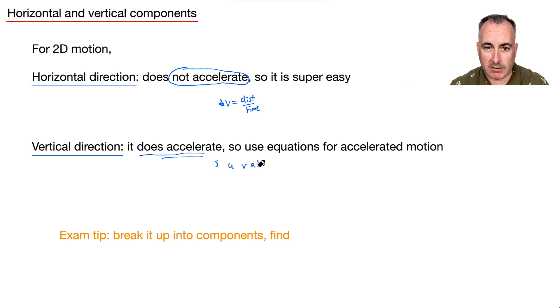So this one you do use your equations for accelerated motion. In other words, you use your SUVAT. So step one when I'm on an exam, first break it up into components. That means you need to find out what is VX and what is VY. For VX, there's no acceleration so we just have V equals distance over time. Whereas in VY it does accelerate, so that means use SUVAT.